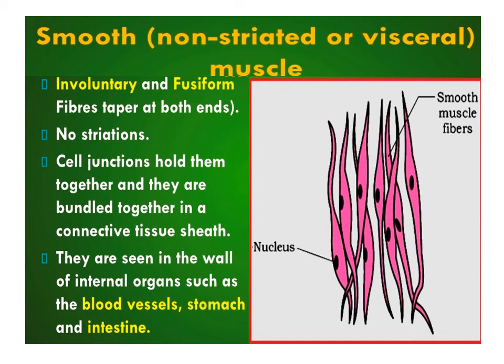Smooth muscles consist of spindle-shaped, uninucleated fibers. The fibers do not show striations. Cell junctions hold them together and they are bundled in connective tissue. Smooth muscles are present in the walls of internal organs such as the stomach, intestine, and blood vessels. The activity of smooth muscles is not under voluntary control, hence they are called involuntary muscles.